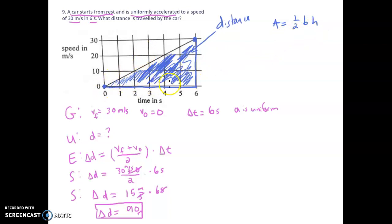Well, and this question is pretty straightforward to do. The base here is six, right? Goes from zero to six. And the height here goes from zero to 30. So the height is 30. And we just plug that in one half, six times 30. And if we multiply that all out, one half times six is three. Three times 30 is 90.